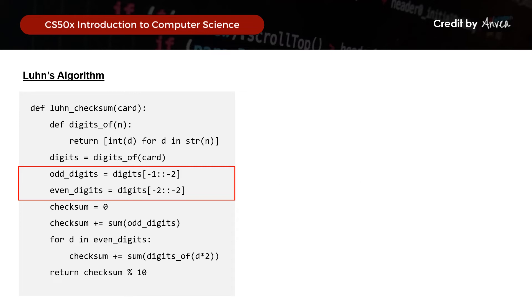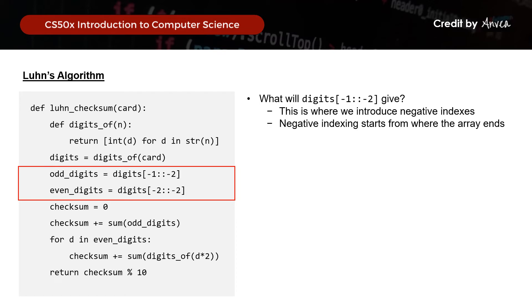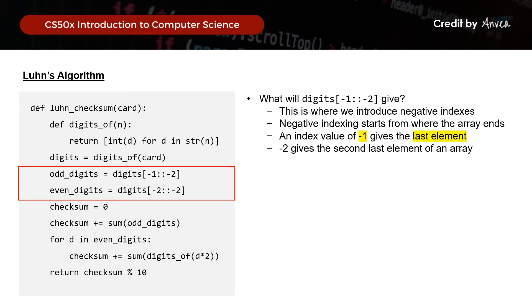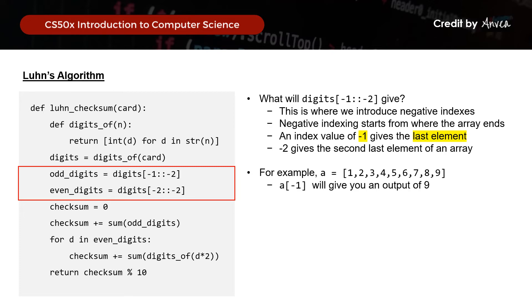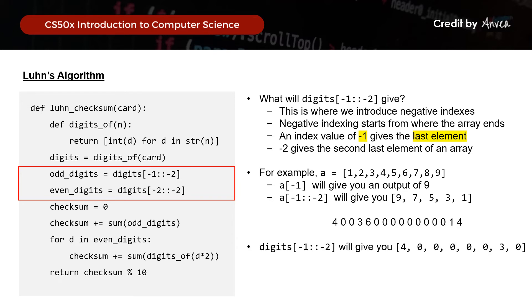What would digits[-1::-2] give? This is where we learn about negative indexes — negative indexing starts from where the array ends, so an index of -1 gives you the last element, -2 gives the second last, and so on. So in our list 1 to 9, a[-1] gives 9. And a[-1::-2] gives 9, 7, 5, 3, 1. Applying this to the credit card number: digits[-1::-2] gives the odd-positioned digits, while digits[-2::-2] gives the even-positioned digits. That's how you get the alternating digits within the credit card number.